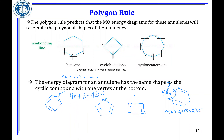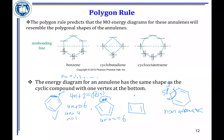For this structure, 4n+2 equals 6, so 4n equals 4 and n equals 1 — it is aromatic. For another structure, 4n+2 also equals 6 because you are counting the pair of unshared electrons. If you have one pair of unshared electrons, you count it. If you have two pairs of unshared electrons, you count one of them. So 4n equals 4 and n equals 1 — this is also aromatic.